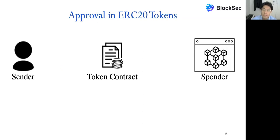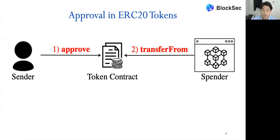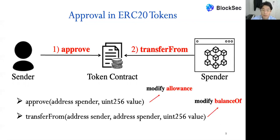In the ERC-20 approval process, there are three main entities: the sender (user), the token contract, and the spender, which are platforms such as exchanges and lending platforms. To use services provided by spender contracts, such as exchanging tokens, the sender needs to grant permission by invoking the approve function. With permission approved, the spender will then transfer the sender's tokens to launch the requested service. The approve function applies changes to the allowance variable, and transferFrom applies changes to the balance variable.